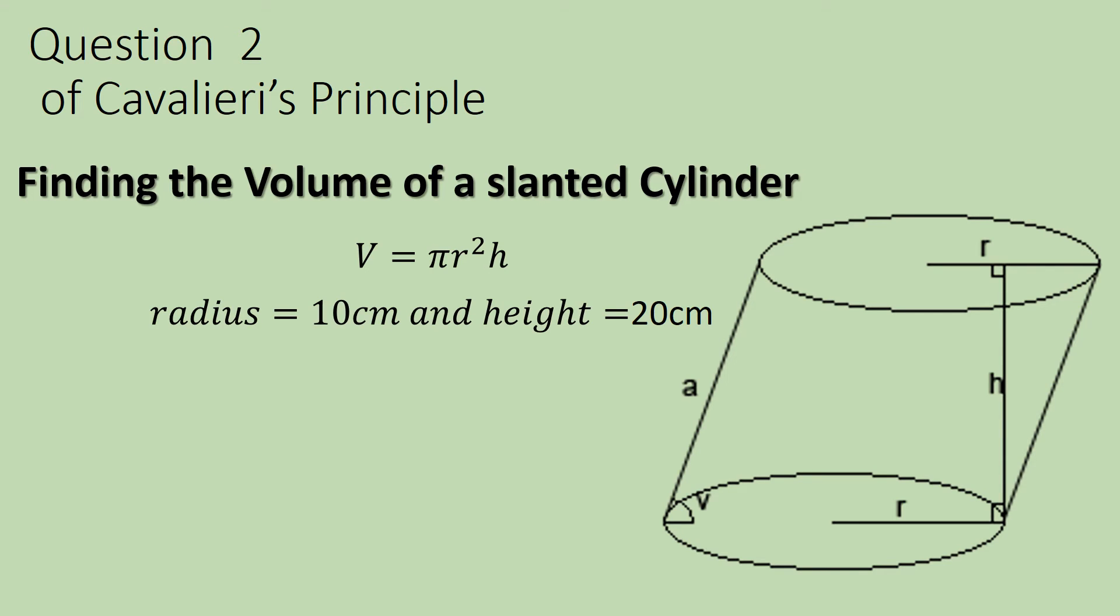So we're told that the radius is 10 and the height, not the slanted height, not A, is 20 centimeters. Let's plug it in. There we go. I squared my radius and there is my answer.